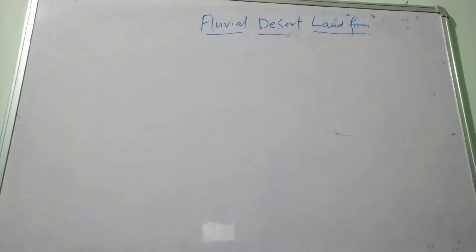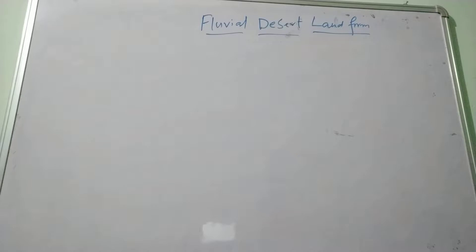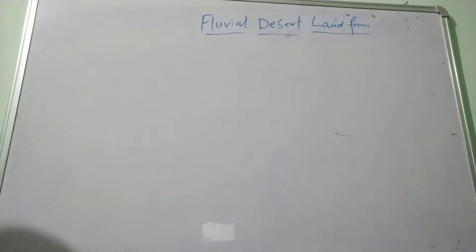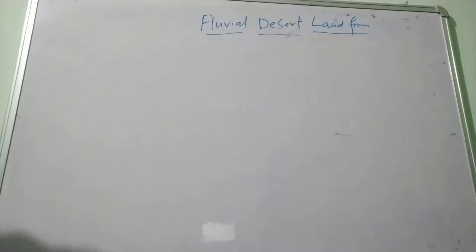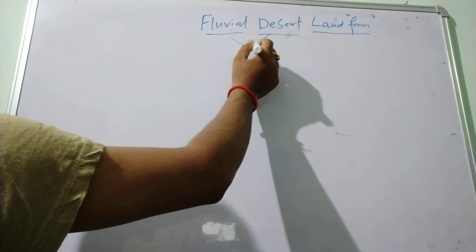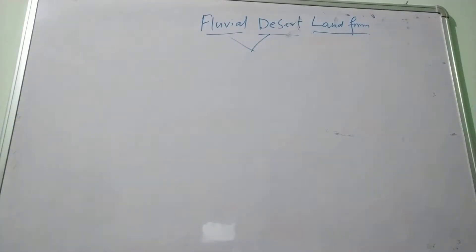We are going to discuss the fluvial desertic landforms found in desert areas. The surface drainage pattern is very less due to low rainfall and high evaporation. Whenever rainfall occurs, some specialist typical landforms are developed in desertic areas, which are known as fluvial desertic landforms. There is very little surface drainage in desert areas because of the low rainfall and high rate of evaporation, which causes low air humidity.